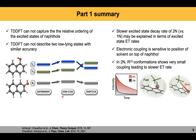To conclude this part: TDDFT cannot capture the relative ordering of excited states of polyacene molecules and naphthol photoacids. From the kinetics side, two-naphthol has specific configurations that have very low electronic coupling.